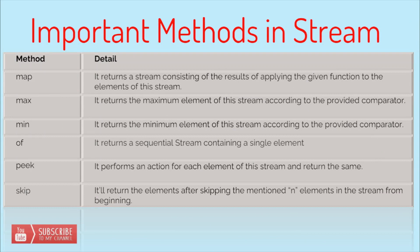map returns a stream consisting of results by applying a given function to all elements of a stream. For example, if we have a stream of numbers 1, 2, 3 and in the map we multiply each by 2, map results in a new stream with values 2, 4, 6 — each element mapped to its double value. max returns the maximum element of the stream according to the provided comparator. Similarly, min returns the minimum element depending on the comparator.